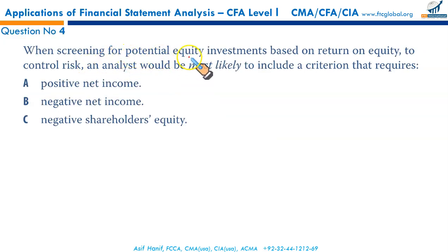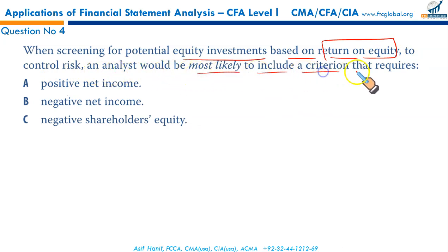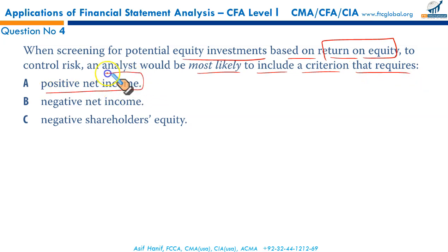When screening for potential equity investments based on return on equity, to control risk an analyst would most likely include criteria requiring: positive net income — that is the desired criteria. Why would you include a criterion of negative net income? Would you select a company that incurs a loss every period?